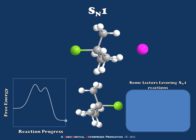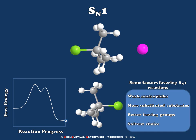Some factors that favor the SN1 reaction include use of weak nucleophiles — the weaker a nucleophile is, the less likely it is to attack before departure of the leaving group and formation of the stable intermediate. More substituted substrates also favor this mechanism, because hyperconjugation from alkyl groups will stabilize the carbocation intermediate. Better leaving groups on the substrate also favor the SN1 reaction, because the leaving group is more likely to depart before nucleophilic attack occurs. Additionally, solvent choice is important, but depends upon the identity of the nucleophile, substrate, and leaving group — so it is difficult to say categorically that a polar protic or polar aprotic solvent would be best.